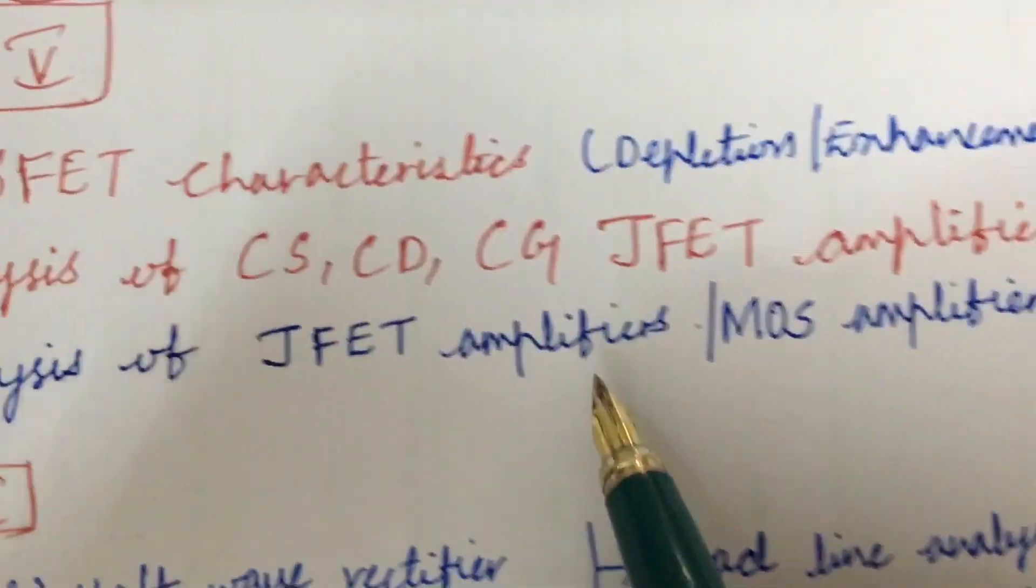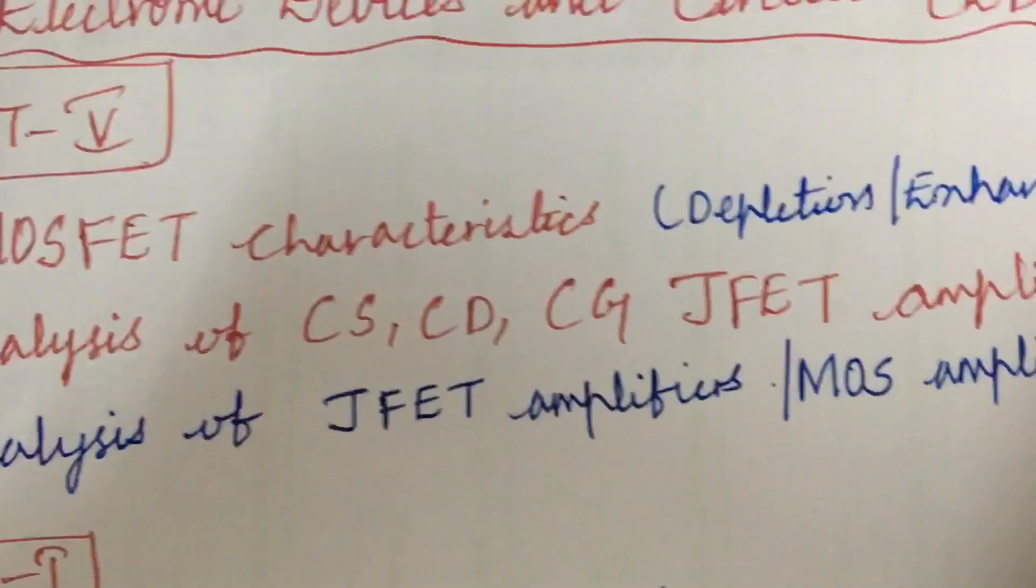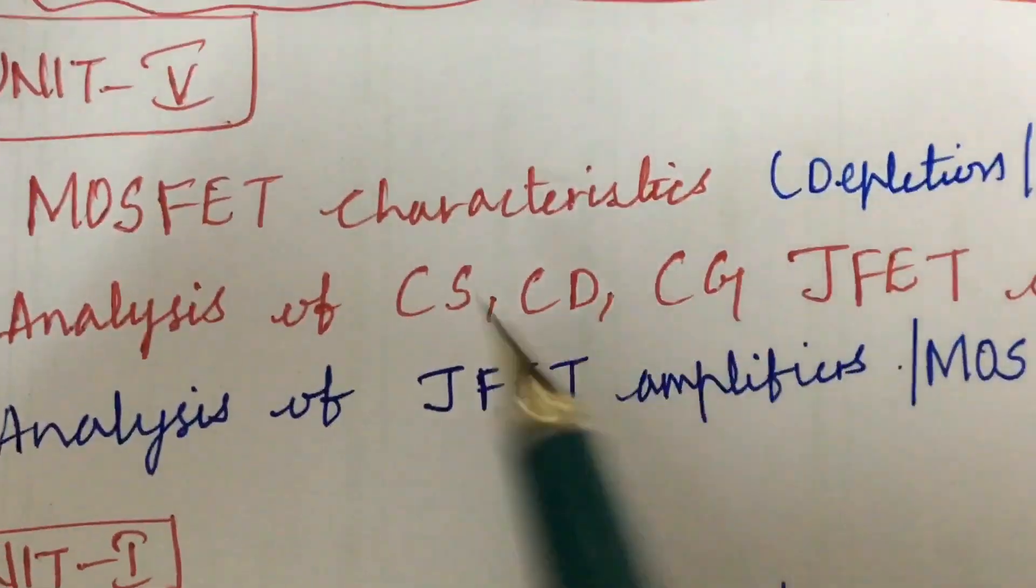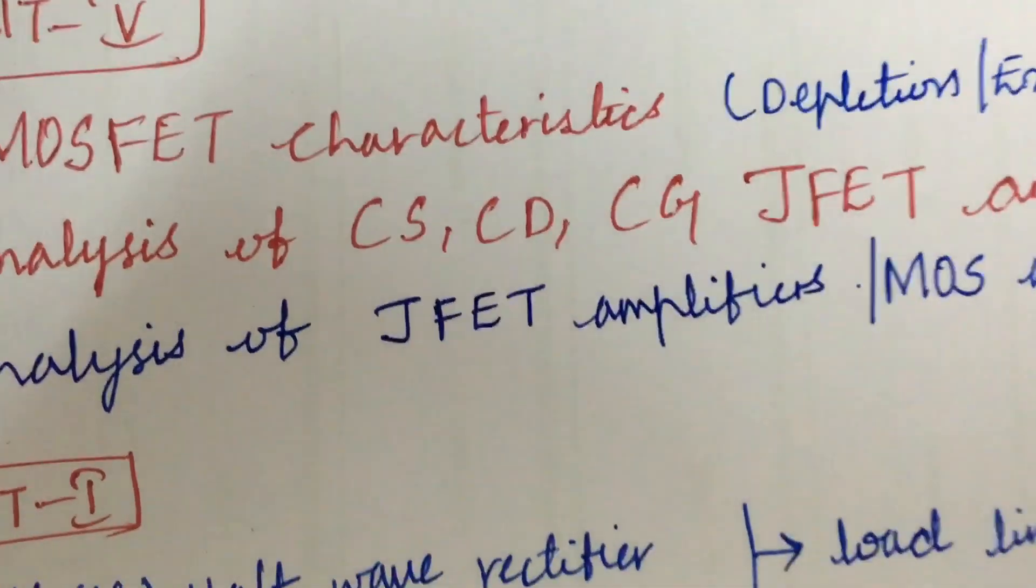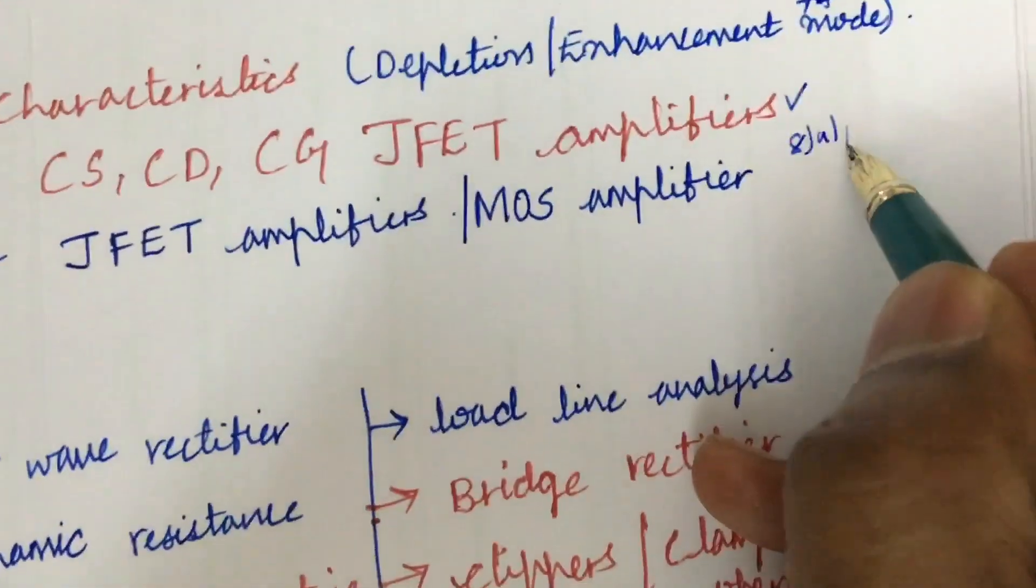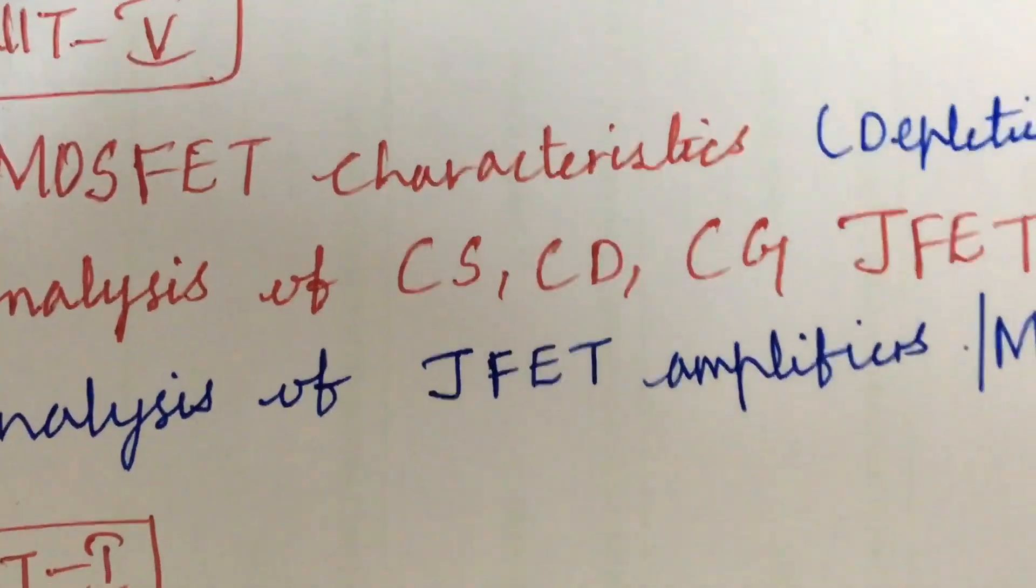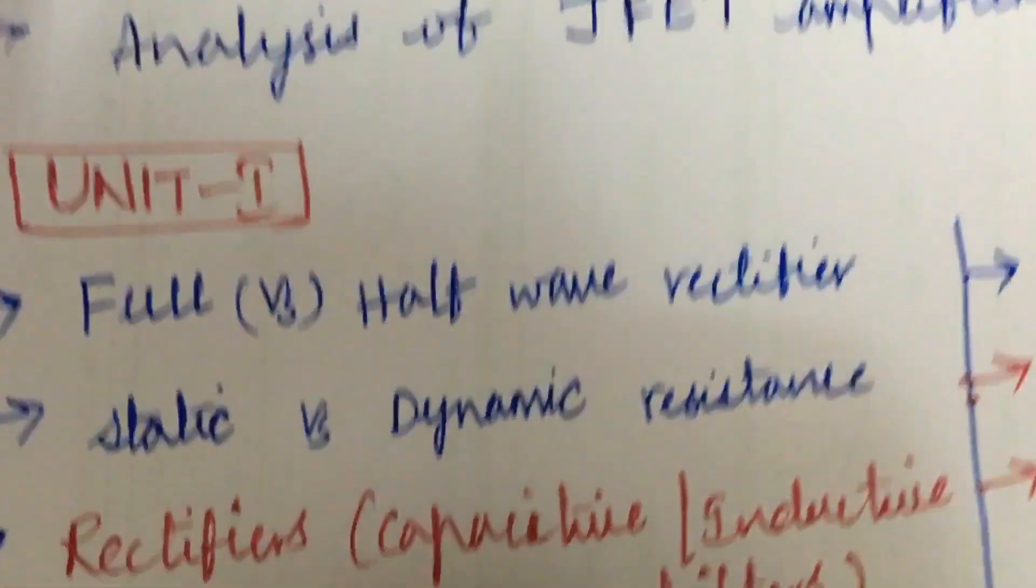Analysis of JFET amplifiers and MOS amplifiers. Do not expect a direct 15-mark question from this part. You are going to get 8A as well as 8B, dear students, of 10, 5, or 7, 8 combination. Hope you are taking your exam neatly.